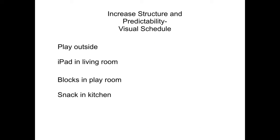Schedule the child's time for the part of the day that he is most likely to engage in negative behaviors. For example, have a list such as: play outside — check it off as the time is completed — iPad in the living room, blocks in the playroom, snack in the kitchen.